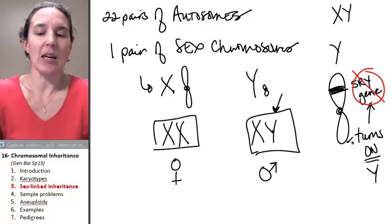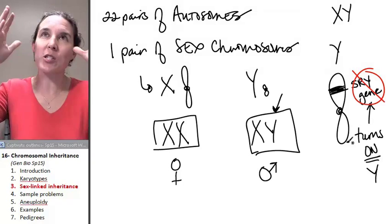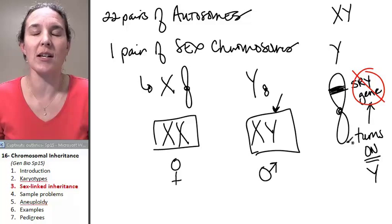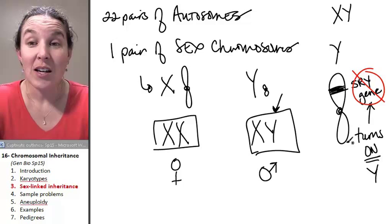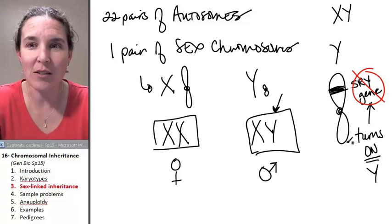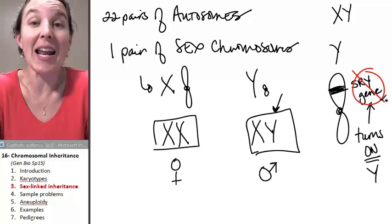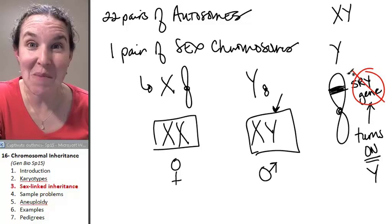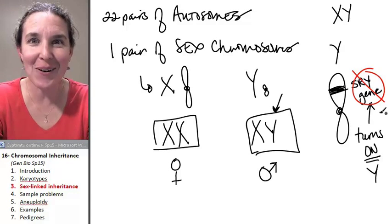In fact, the number of supermodels, super skinny, super tall, very boyish figures, but drop dead gorgeous, especially by our societal standards, those, not always, but there is a higher percentage of supermodels with a messed up SRY gene. They're actually men. They're genetically male, but phenotypically female, and that's because they're missing that SRY gene. How cool is that?